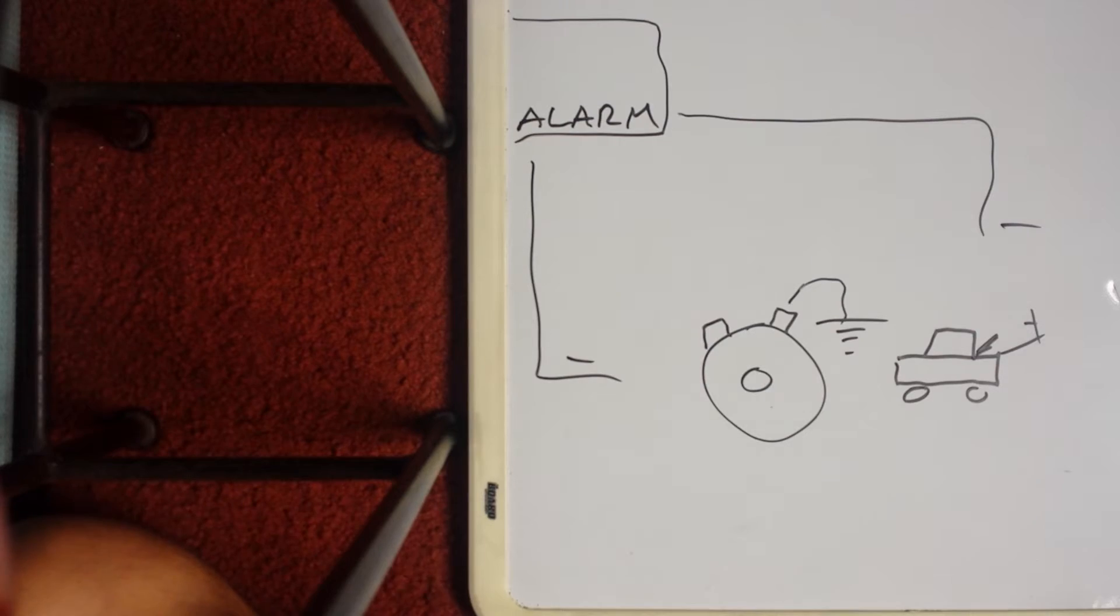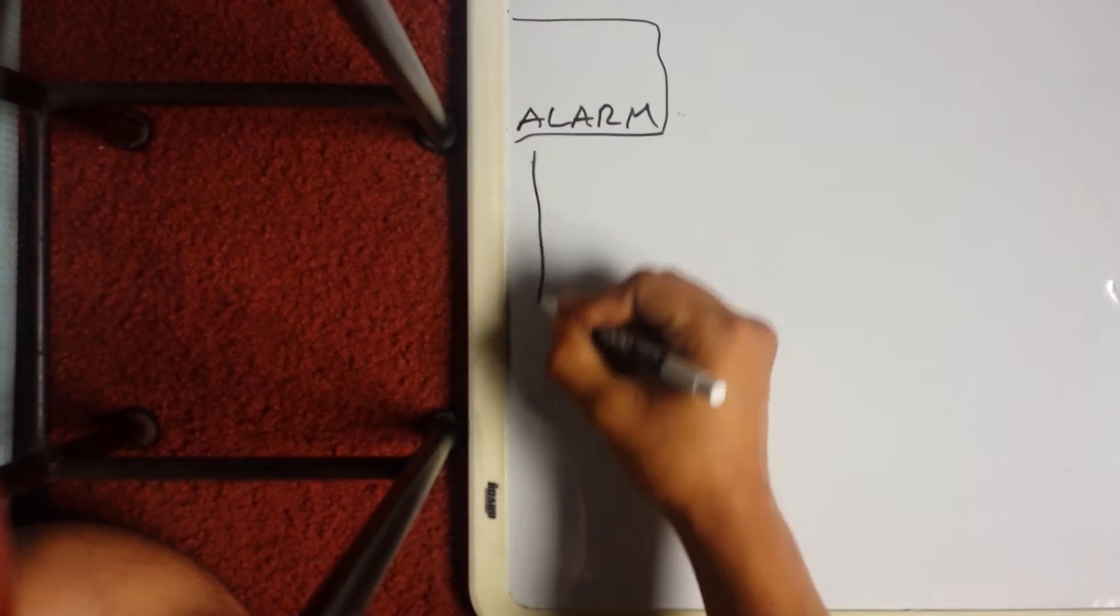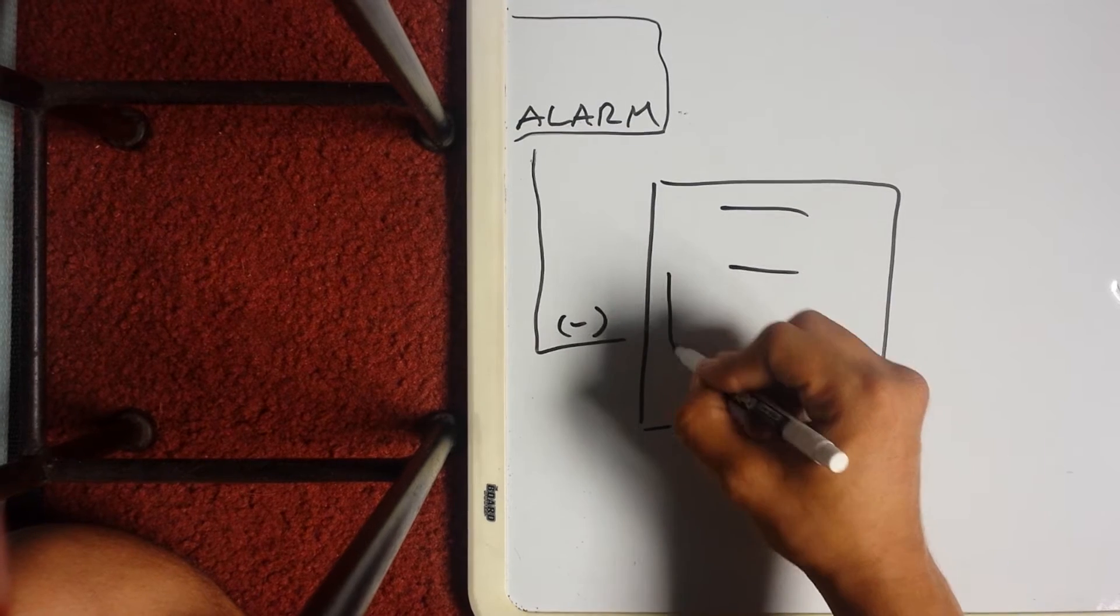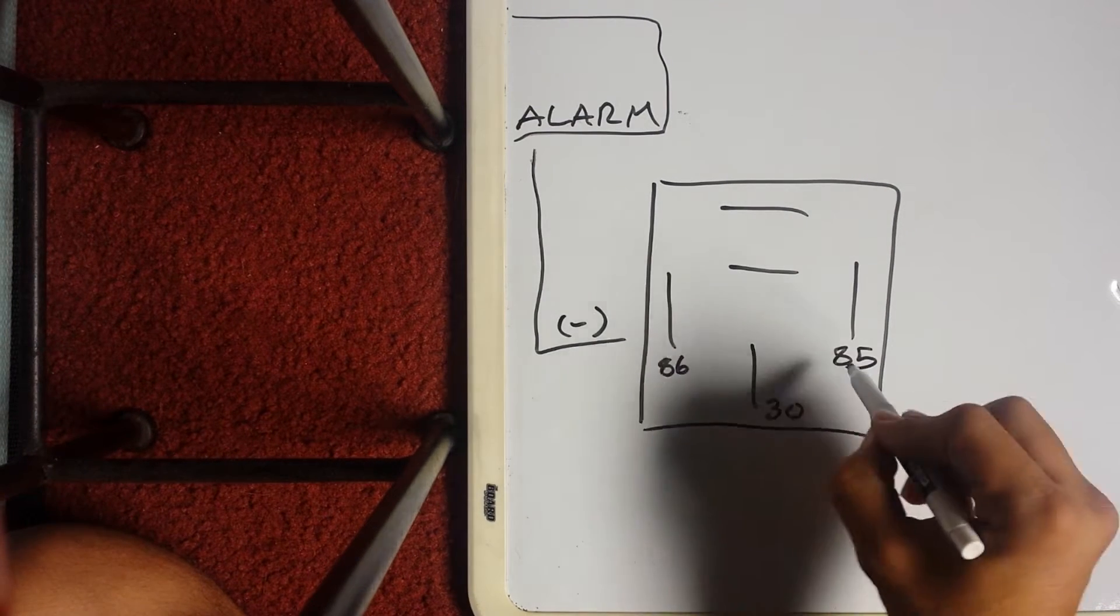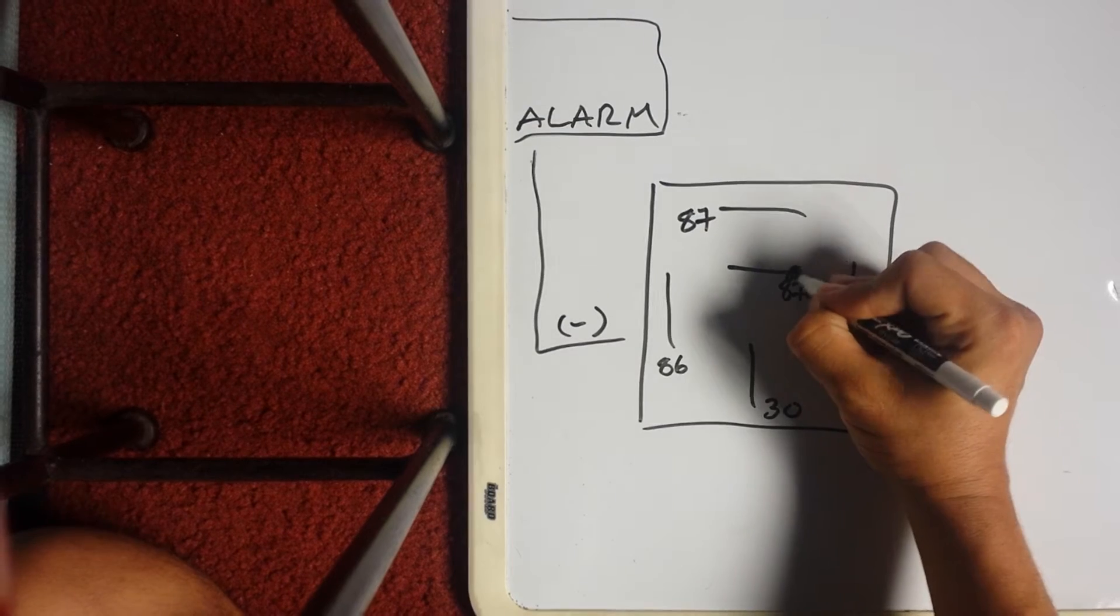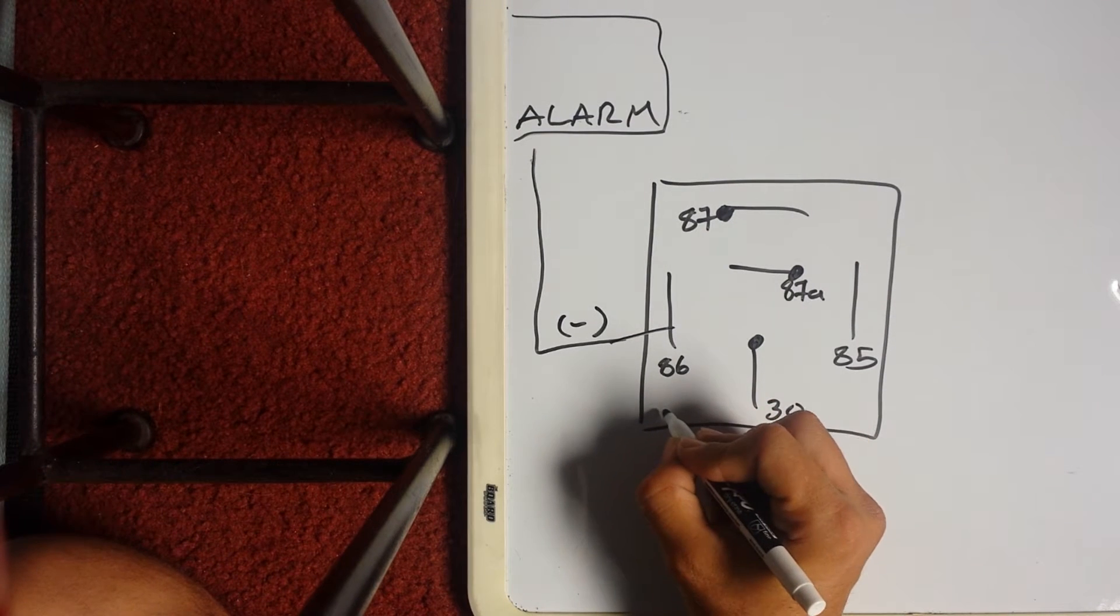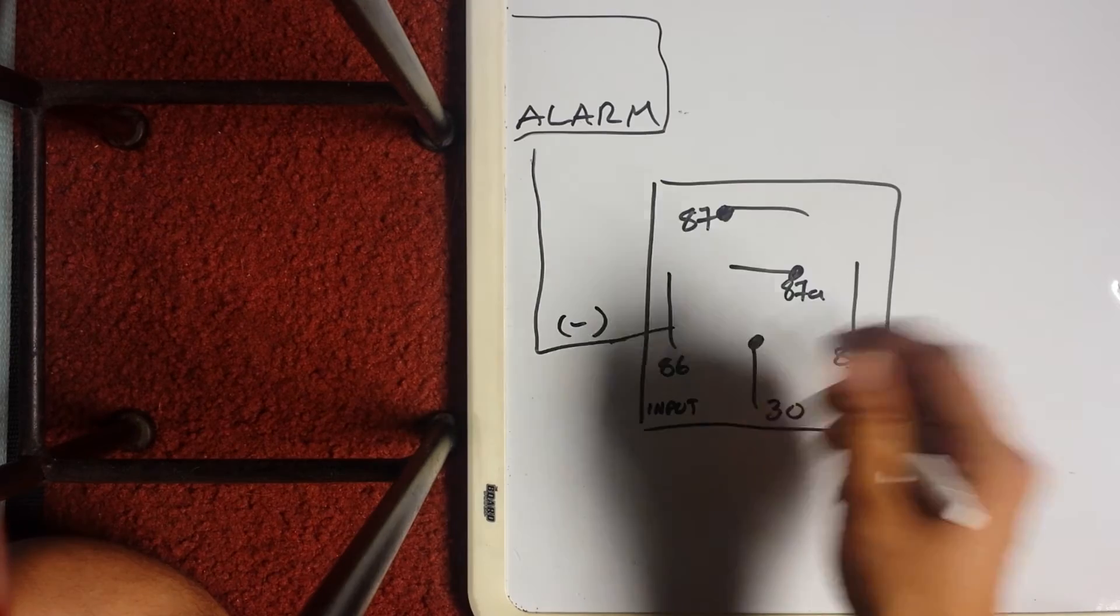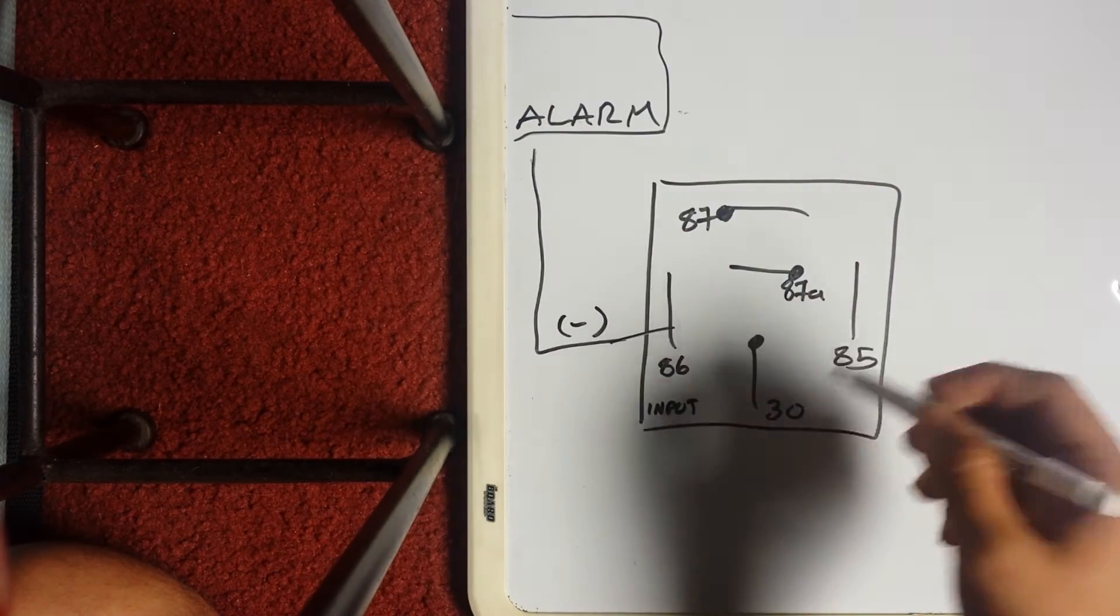So let's go ahead and convert our power here. You got negative output from the alarm. You're gonna have your relay right here, five terminals, five wire relay: 30, 86, 85, 87a, 87. Remember that's how you energize the relay. I like to use 86 as my input.